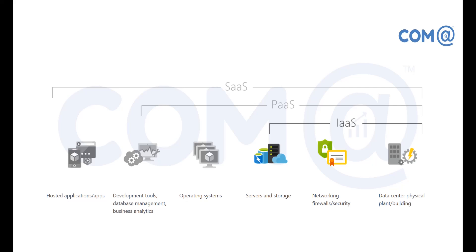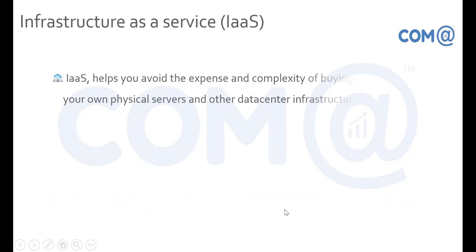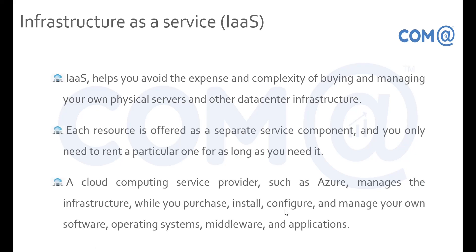In IaaS, the data center premises — including the building, network resources like switches and firewalls, and servers and storage — are managed by the cloud service provider. The rest of the configuration is managed by the customer. IaaS helps you avoid the expense and complexity of buying and managing physical servers. Each resource is offered as a separate service component, rented only for as long as you need it. The cloud provider manages the infrastructure while you install, configure, and manage your own software, operating system, middleware, and applications.